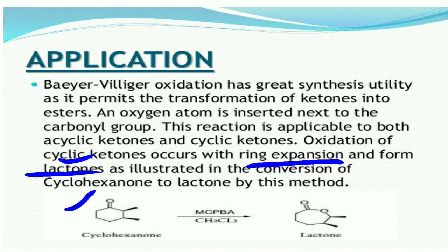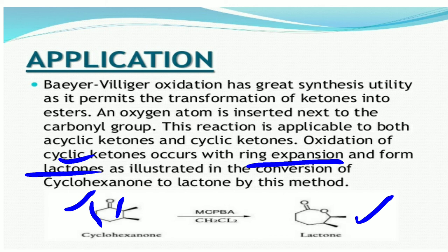The oxygen is inserted adjacent to the more substituted alkyl (secondary) group, as we discussed for migratory tendency. That is why we get the lactone compound with oxygen on the more substituted side. Importantly: when an acyclic ketone is used, the product is an ester; when a cyclic ketone is oxidized with MCPBA, we get the lactone compound.